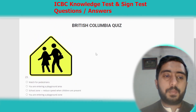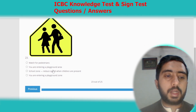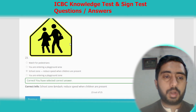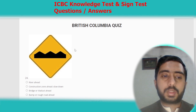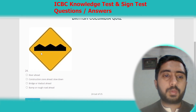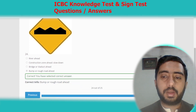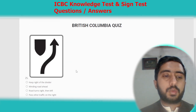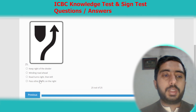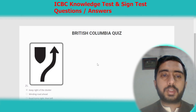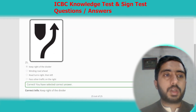Symbol twenty-two represents signal light ahead. Option B. Symbol twenty-three represents school zone, reduce speed when children are present. Option C. Symbol twenty-four represents a bump or rough road ahead. Option D. Symbol twenty-five represents right-of-way at a divider. Option A. British Columbia sign test number one is completed.